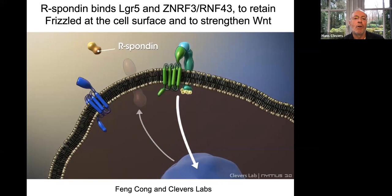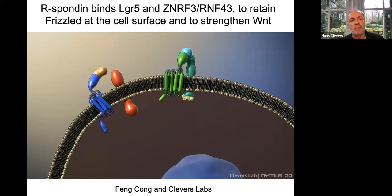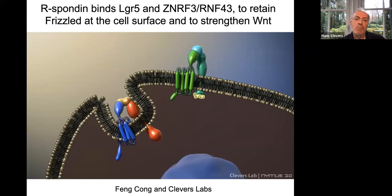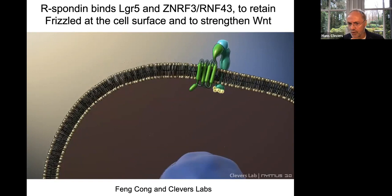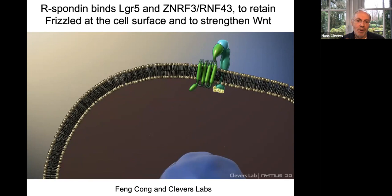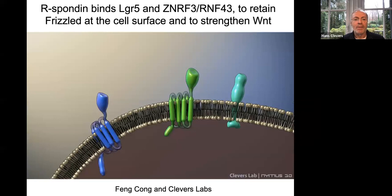We found that R-spondin binds to LGR5 — LGR5 is actually a receptor for R-spondin — and this is the mechanism resolved by the Fang Kong lab and our lab. When a cell undergoes active Wnt signaling and LGR5 is expressed on the surface, R-spondin binds with high affinity to LGR5 and also to these E3 ligases, removing them from the surface. Now the active Wnt signaling complex stays on the cell surface for days. The signal strength goes from maybe 5-fold to 200 to 500-fold. This would paralyze embryonic development — but this is exactly what adult stem cells need: robust, prolonged Wnt signals.